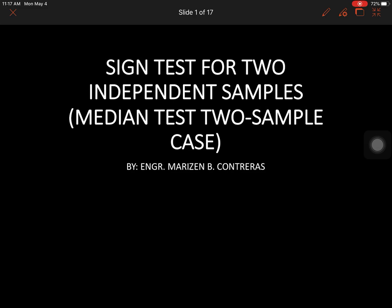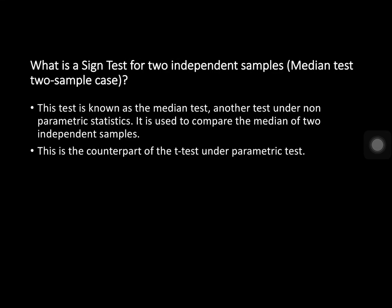Good morning. The first topic I'm going to discuss today is the sign test for two independent samples. It is also known as the median test for the two-sample case. This test is another test under non-parametric statistics. It is used to compare the median of two independent samples, and it is the counterpart of the t-test under parametric tests.